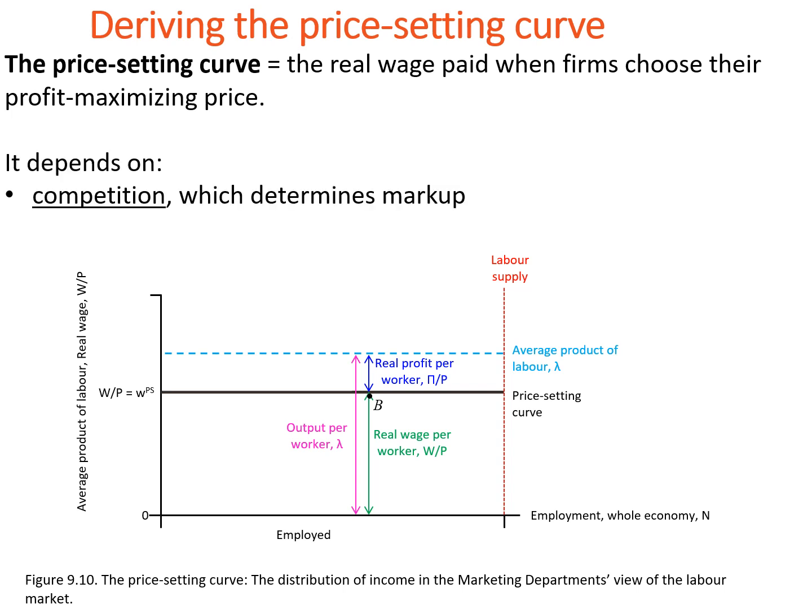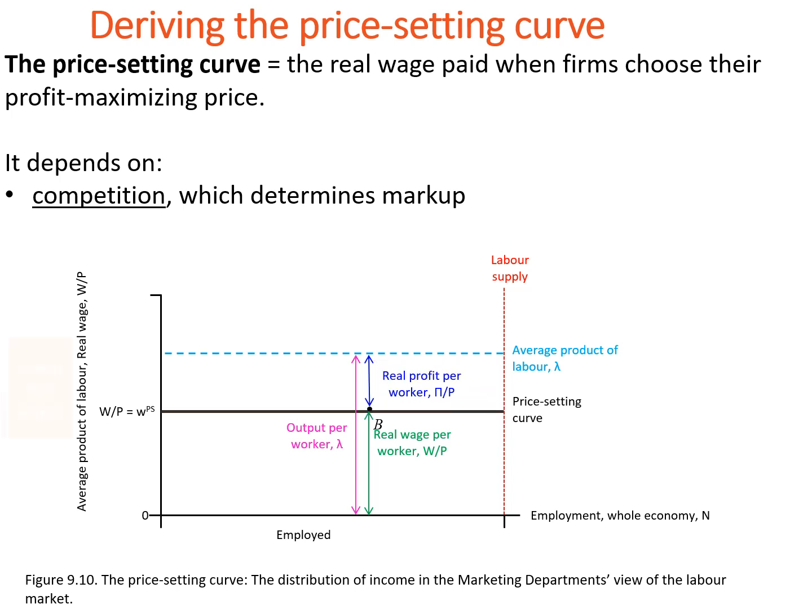The first one is competition. The less the competition, the better a firm's position in the market. It allows them to have a higher markup, increasing the profit per worker. Since this leads to higher prices across the whole economy, it implies lower real wages, pushing down the price setting curve.